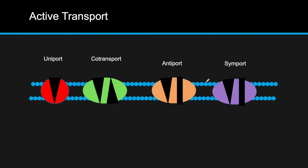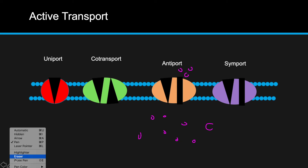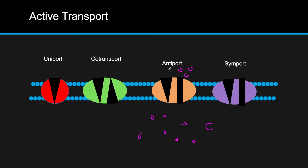Secondary active transport is where one molecule moves against its concentration gradient and another moves with its concentration gradient. In antiport, the purple molecules have a very low concentration outside and high inside, while the green molecules also have low outside and high inside. The purple molecules naturally move with their concentration gradient through a protein channel, generating energy that allows the green molecules to go against their concentration gradient. This opposite movement gives it the name antiport.